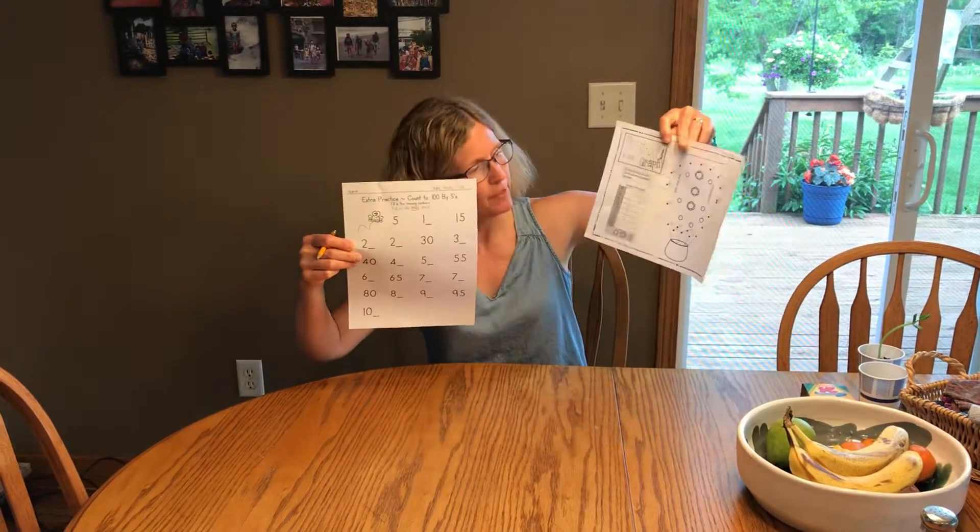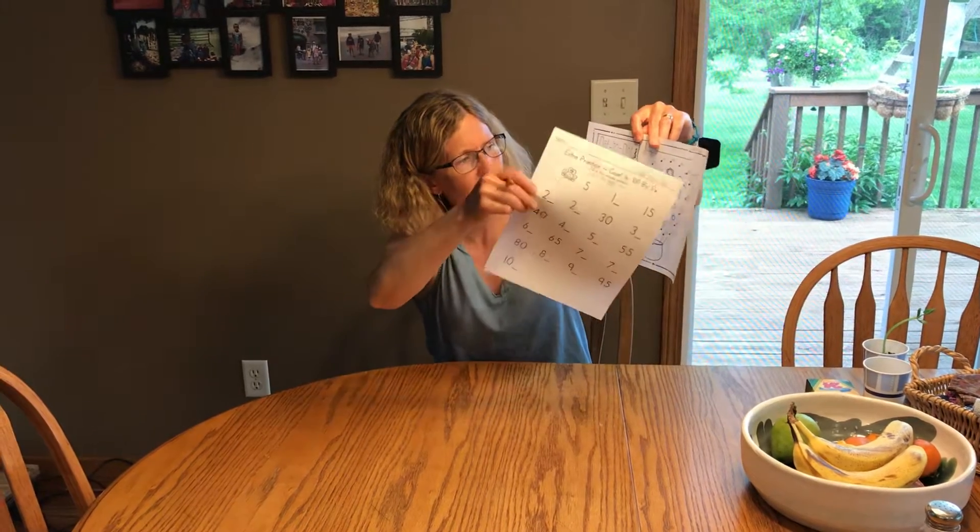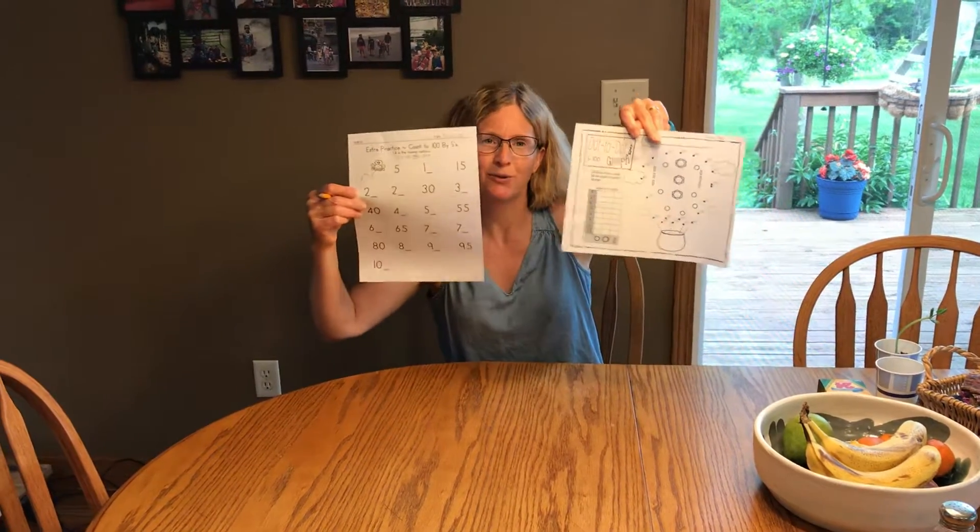And this dot to dot by fives has a pot on the bottom and it kind of looks like clouds. So find those two papers, grab a pencil, and let's get started.